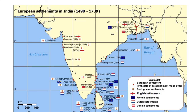Look at this Indian map. This map shows the European settlements in India during 1498 to 1739. During this period, four important European countries — Portuguese, English, French, and Dutch — had settlements in India. English settlements are marked with a cross symbol. Wherever a cross is shown, that place was an English settlement: Hooghly, Kolkata, Visakhapatnam, Madras, Bombay, Surat — all these places marked with a cross were English settlements in India during this period.